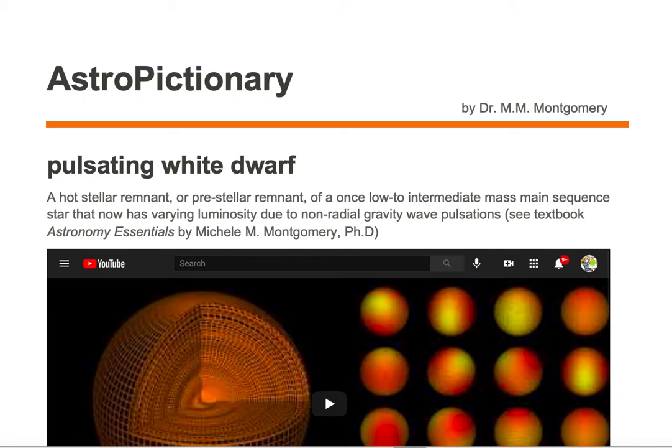A pulsating white dwarf is a hot stellar remnant or pre-stellar remnant of a once low to intermediate mass main sequence star that now has varying luminosity due to non-radial gravity wave pulsations.